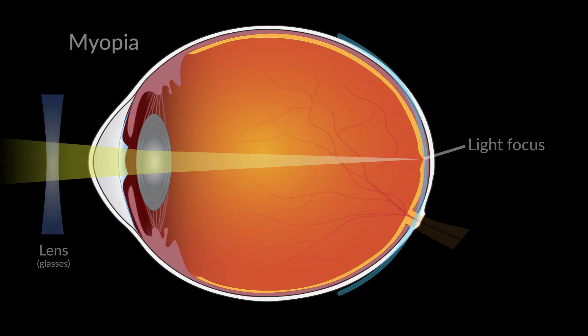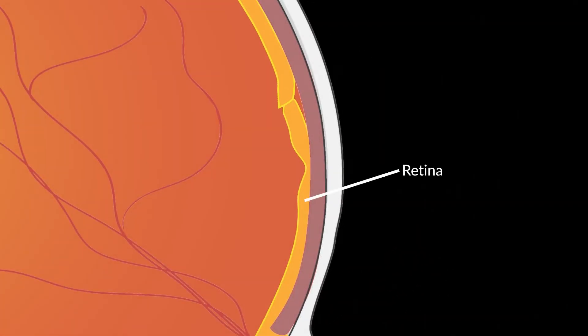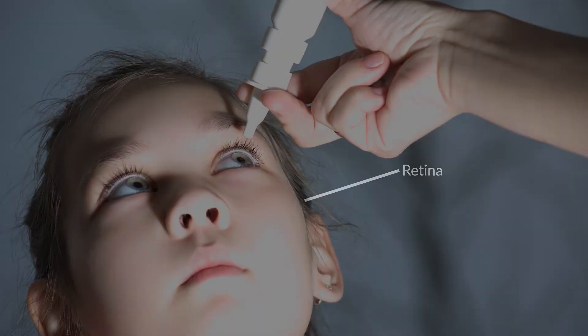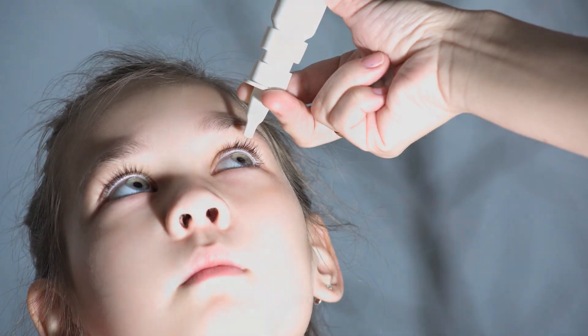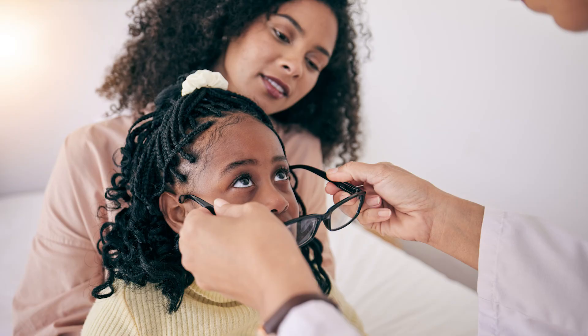However, regular glasses do not slow myopia development. High myopia can lead to blinding conditions like retinal detachment in later life. Researchers are exploring ways to slow myopia progression in children.